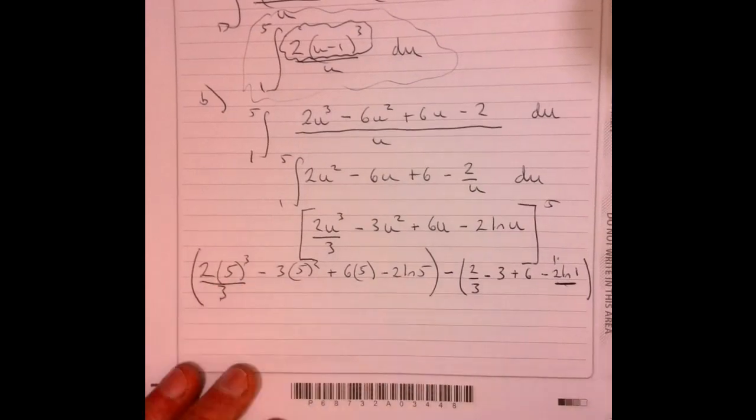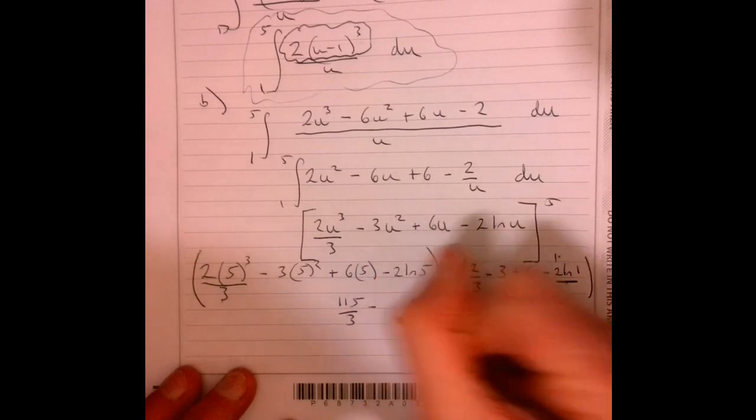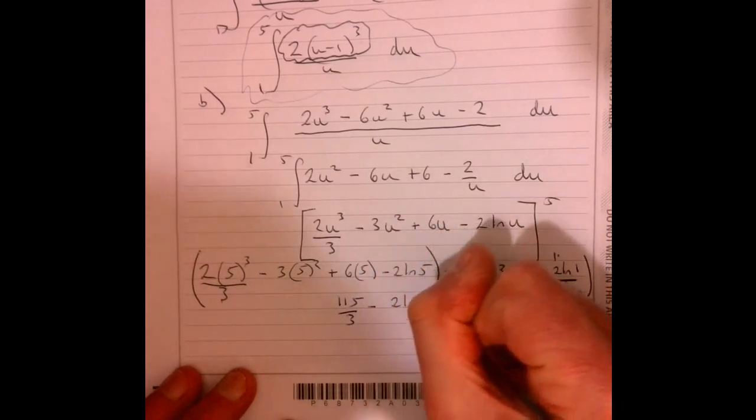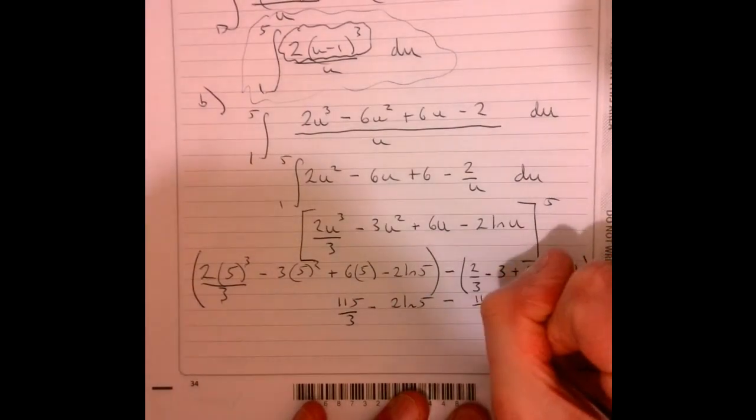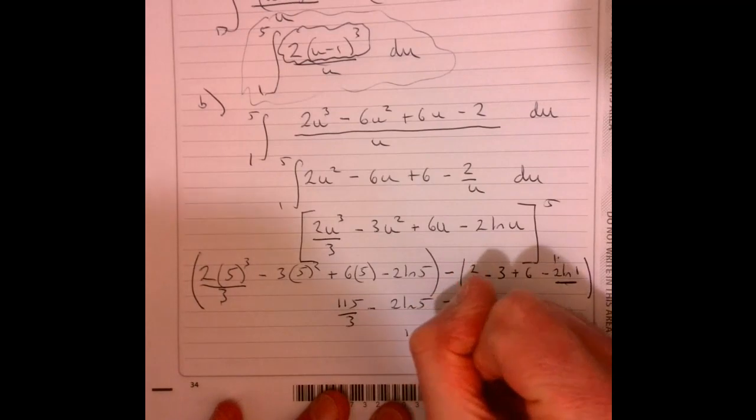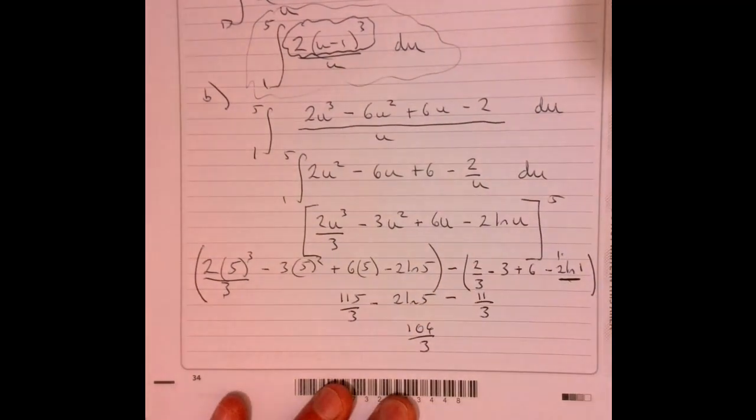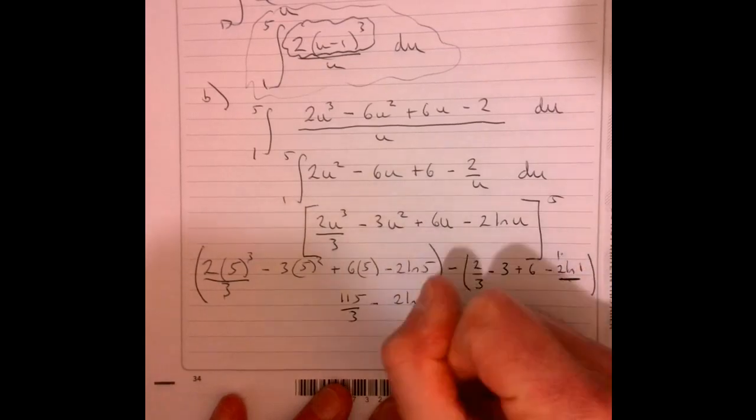Work this out. That's going to give you 115 over 3, take away 2 ln 5. And then take away 11 over 3. That's the answer to this. And that gives us 104 over 3, take away 2 ln 5.